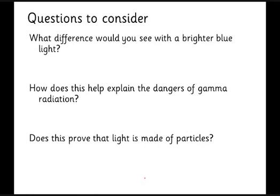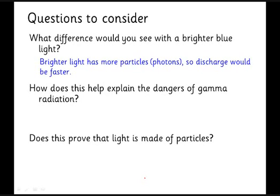Just a few questions to make you see if you're clear on this. So a brighter blue light, what's that going to do? Well, a brighter light means more photons per second in a particle model. So more photons per second means you knock off more electrons per second. So you'll discharge the metal plate faster.